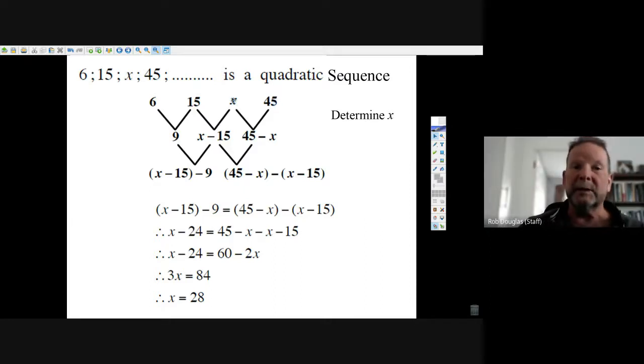So right minus left. 45 minus x goes there. Well, we have to find the second difference, so we go x minus 15 minus 9, which gives me x minus 24.